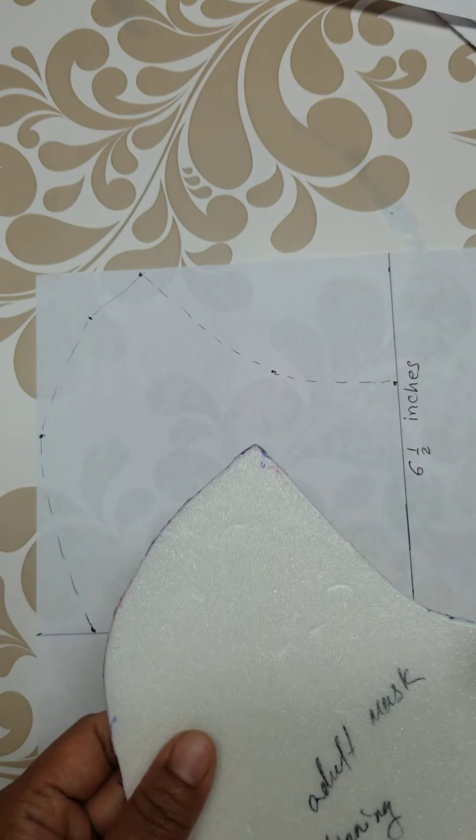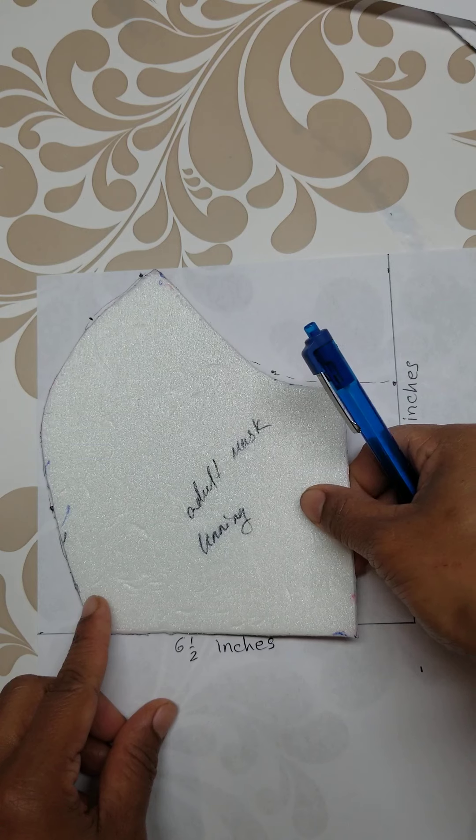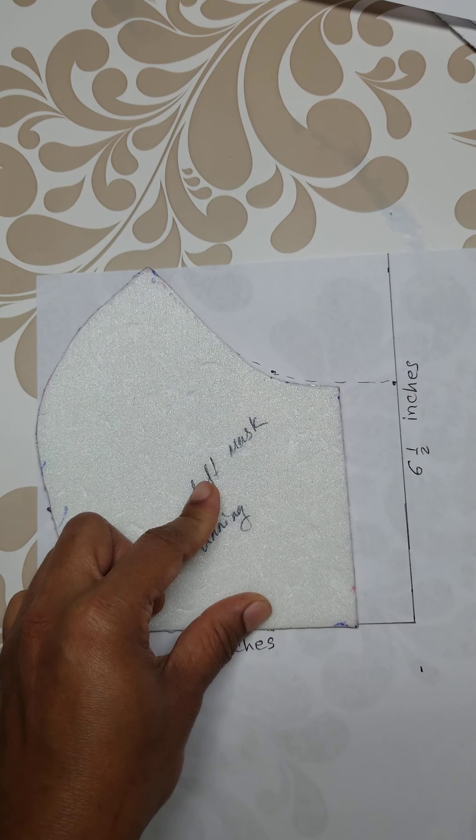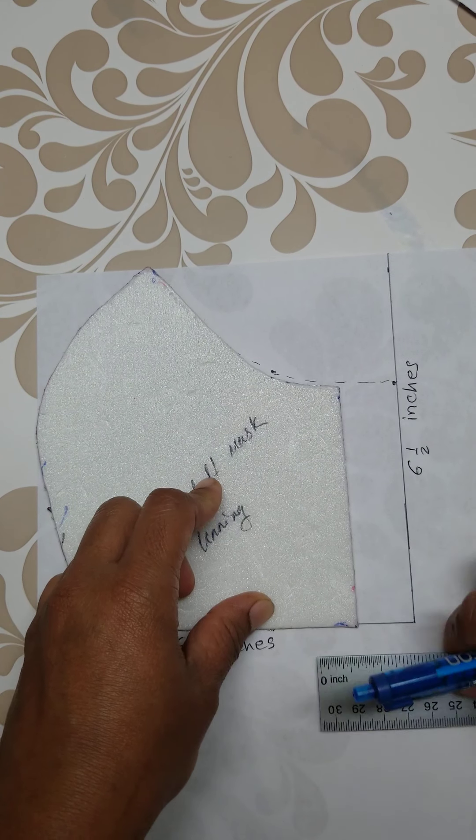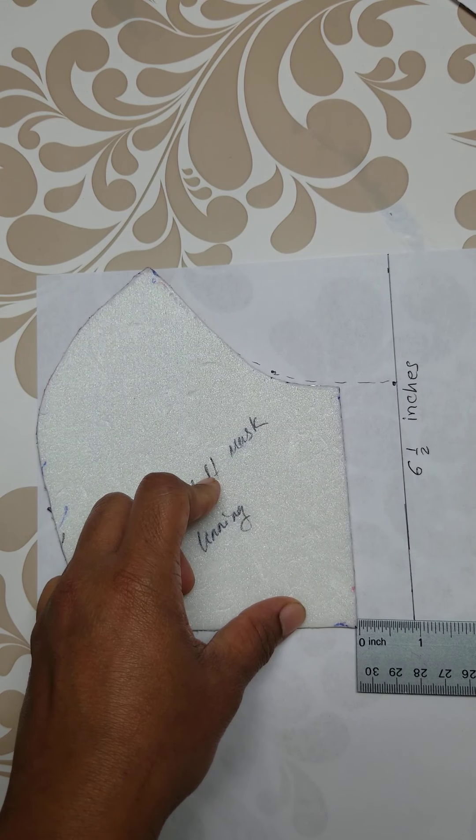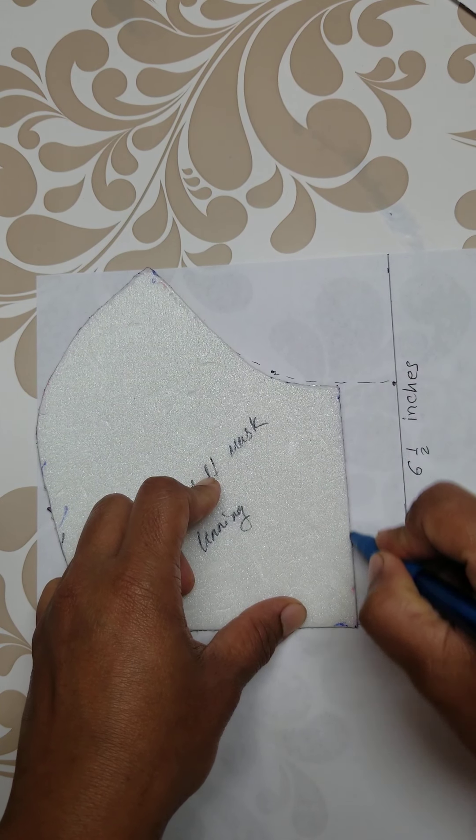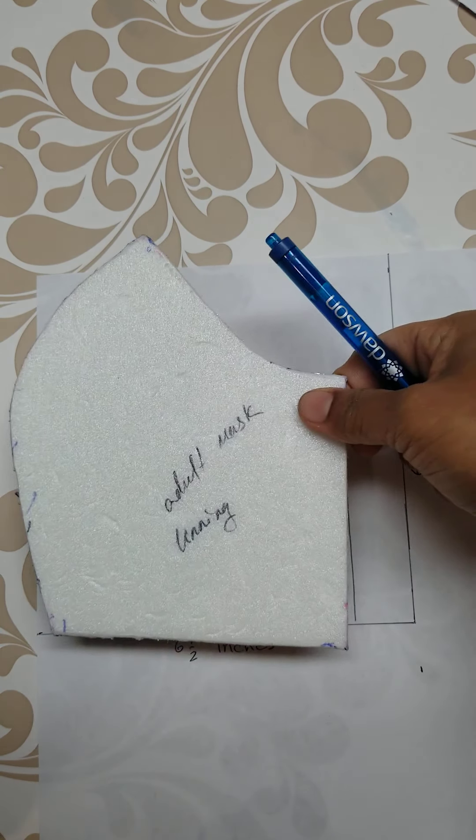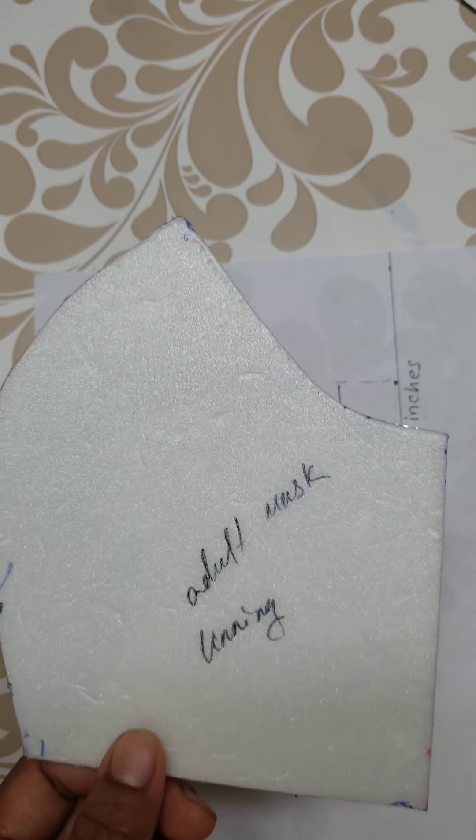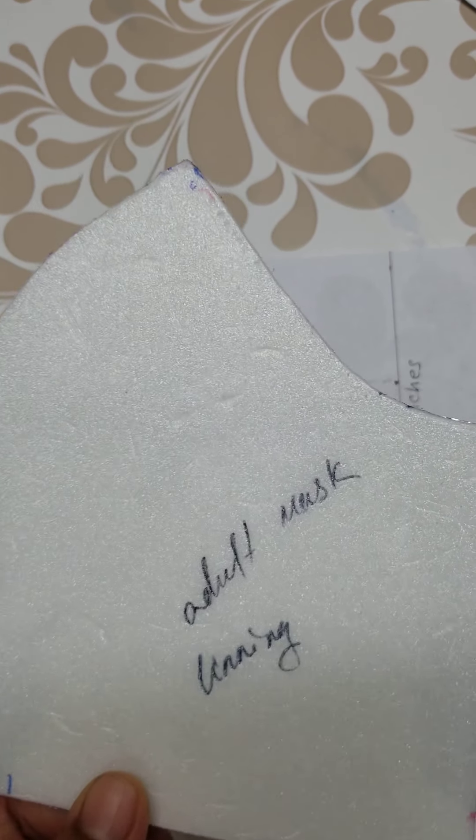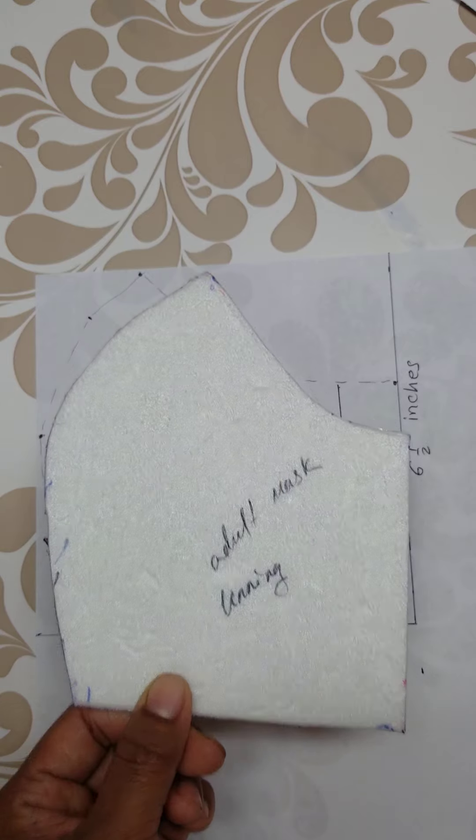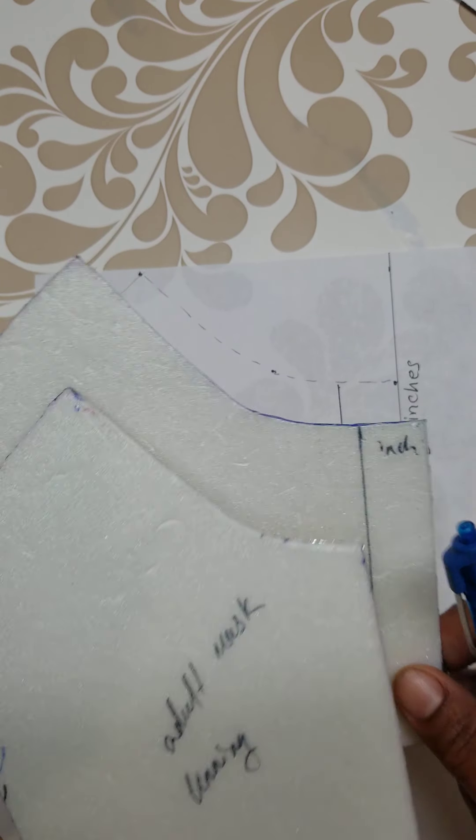And for the other one, this is for the lining. I will show you. I keep one inch here. This is for the lining. Again, to revise, you make two patterns from this one and two from this one, so all together four.